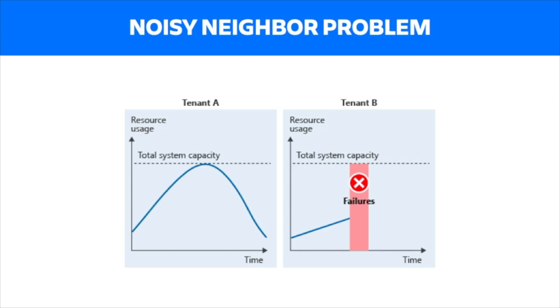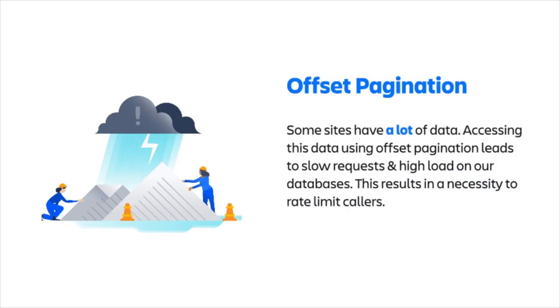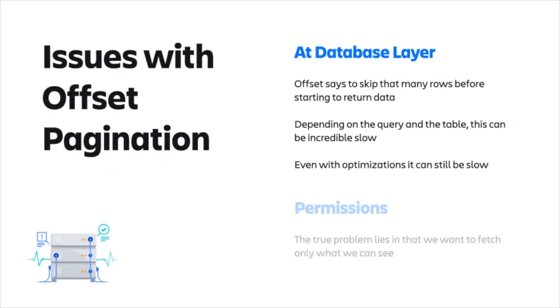This is a preface into one of the ways we help fix this: cursor-based pagination. As a preface, let's take a look at offset-based pagination. In today's cloud world, many sites have a lot of data. Scrolling through these massive data sets via offset pagination can cause issues such as slow requests or high database load. This means that in some cases we have had to rate limit callers. With offset-based pagination, when you pass the start index, you're basically telling the server: skip this number of rows before you start to return data. However, depending on the query and the table it is made against, this can become very slow, even with optimizations.